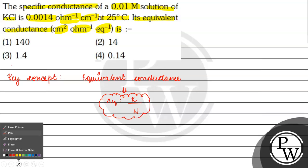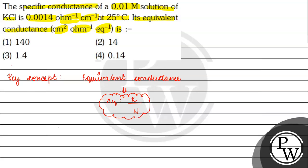In this question, kappa has been given as 0.0014 ohm inverse centimeter inverse. Now we need to find the normality. We have been given molarity, and molarity multiplied by n-factor equals normality.